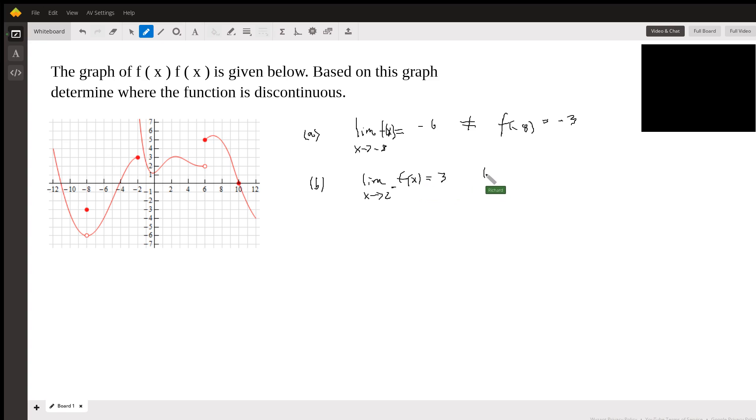And the limit as x approaches negative two from the right is equal to infinity. This is a vertical asymptote here.